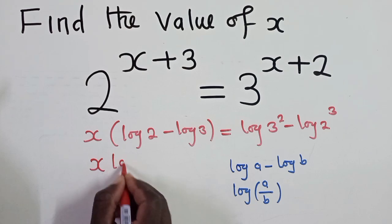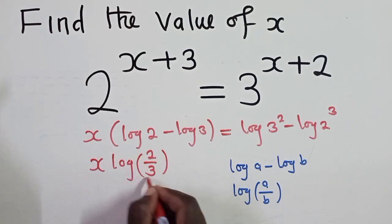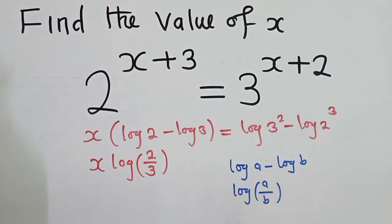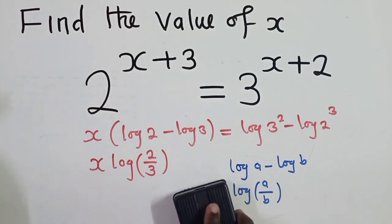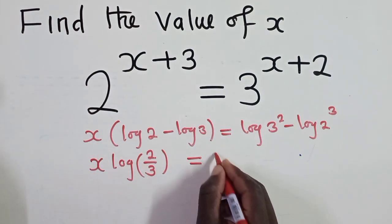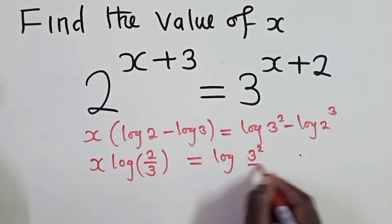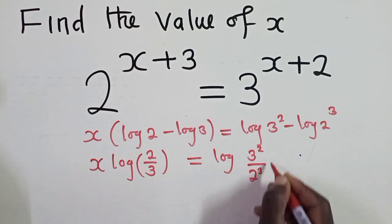So you divide this over this. And this is what we have. So we apply that. We have x log 2 over 3. This is what we have here, using this property. The same thing must be done the other side, the same property. So it will be equal to log 3 power 2 over log 2 power 3.